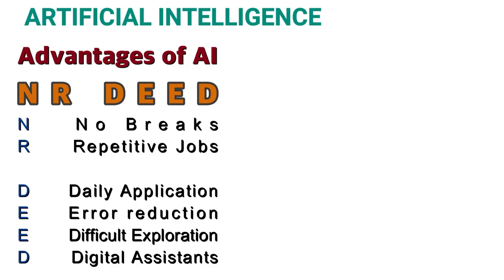The next topic is Advantages of AI, and the mnemonic for the same is 'NR DEED'. N stands for No Breaks — unlike humans, machines do not require frequent breaks. R stands for Repetitive Jobs — repetitive and monotonous tasks can be carried out with machine intelligence, because machines can think faster than humans and can multitask. D stands for Daily Application, E for Error Reduction, another E for Difficult Exploration, and D for Digital Assistant.